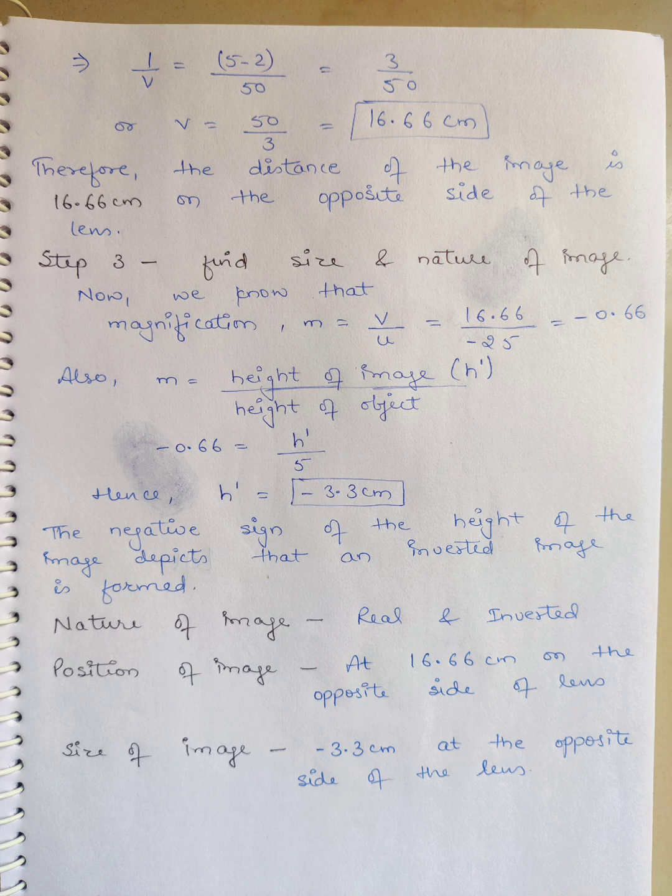The image distance v is 16.66 cm on the opposite side. Now step 3, we need size and nature using magnification formula m = v/u and m = h'/h. We calculate m from u and v values. With height of object h = 5 cm and m = -0.66, height of image h' = -3.3 cm. The minus sign indicates inverted image. Final result: nature of image is real and inverted, position is 16.66 cm on the opposite side of lens, and size of image is -3.3 cm.